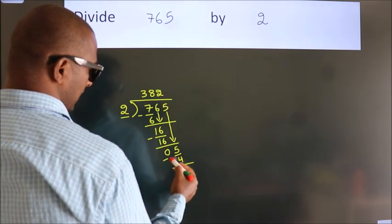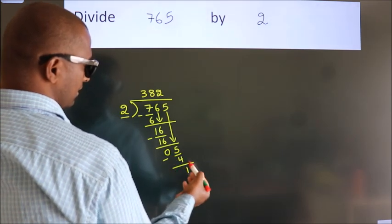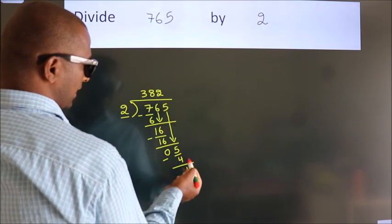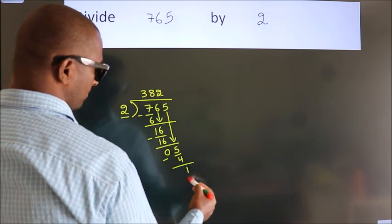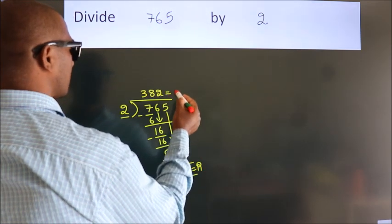Now we subtract and get 1. After this, no more numbers to bring down, so we stop here. This is our remainder, and this is our quotient.